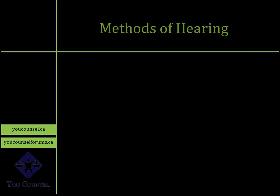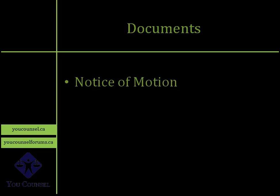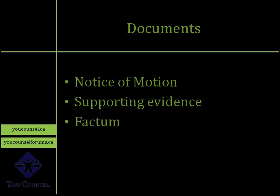How are motions heard? There are basically two ways: a motion could be in writing or heard orally. There are a number of straightforward motions done in writing, and even contested motions can in some circumstances be done in writing. The majority of contested or opposed motions are done orally before a master or a judge. Key documents include the Notice of Motion, which you prepare, serve on other parties, and file with the court, along with supporting evidence. In some circumstances you will need to prepare and serve a factum — your legal argument in writing.